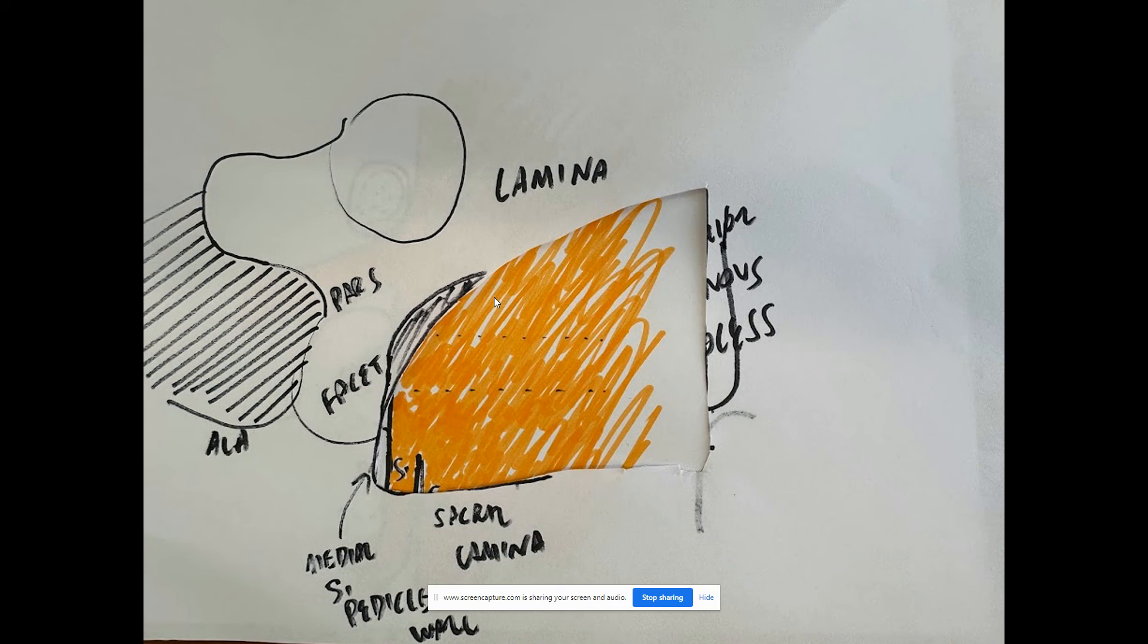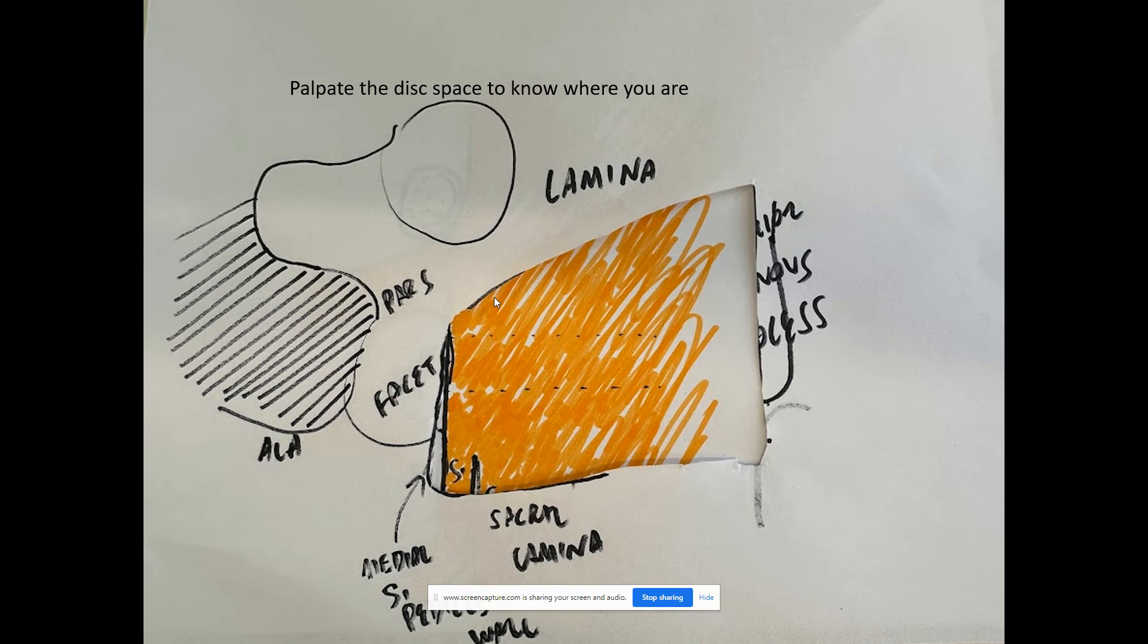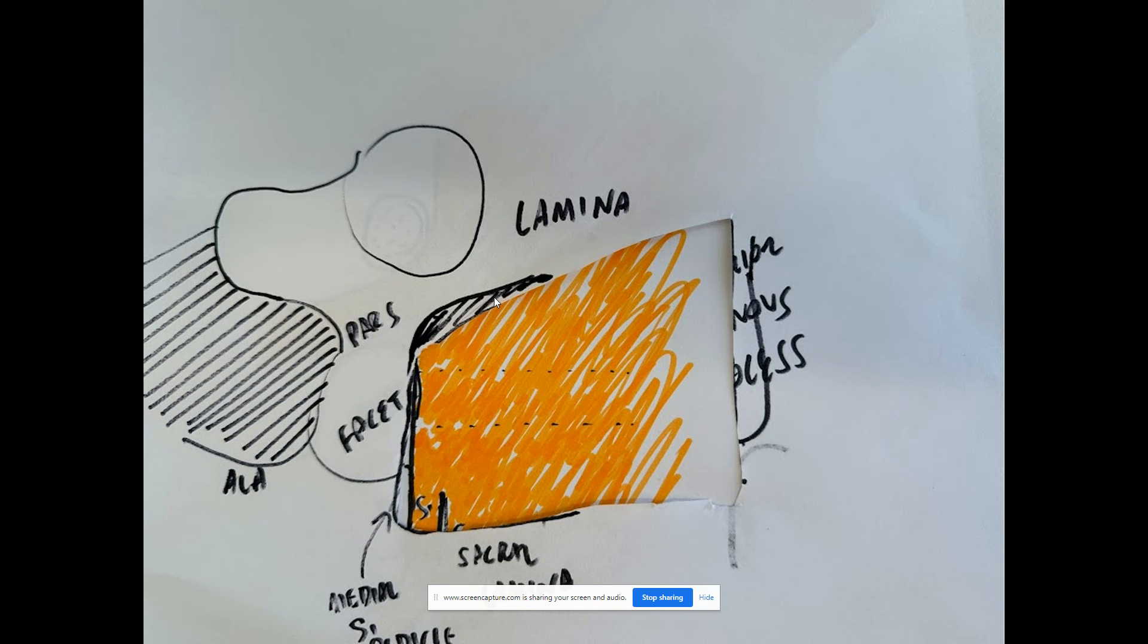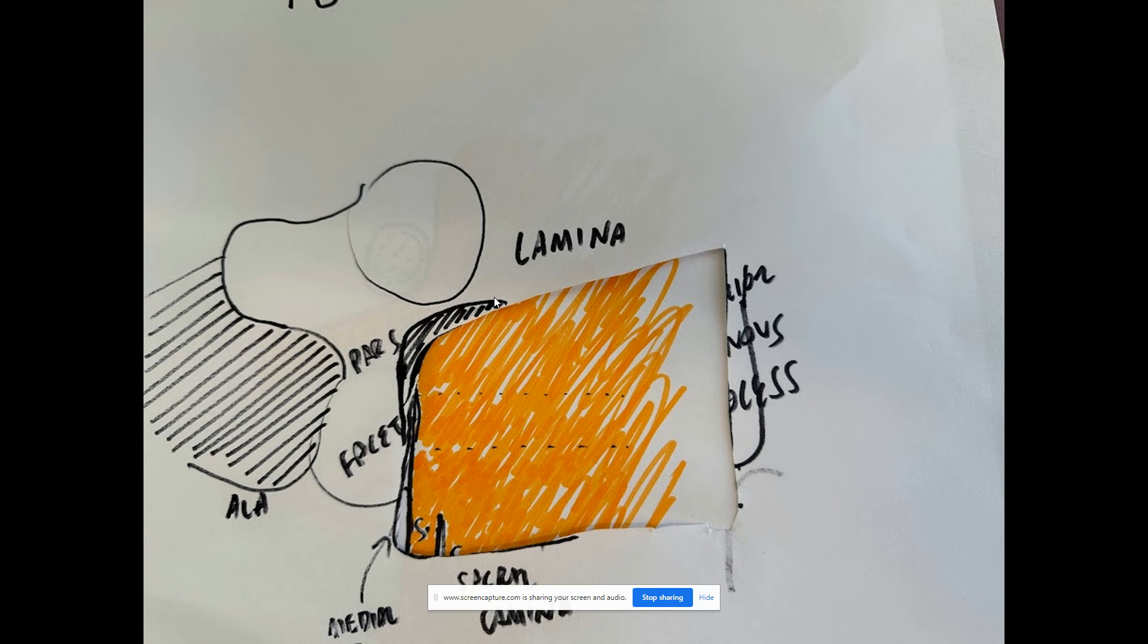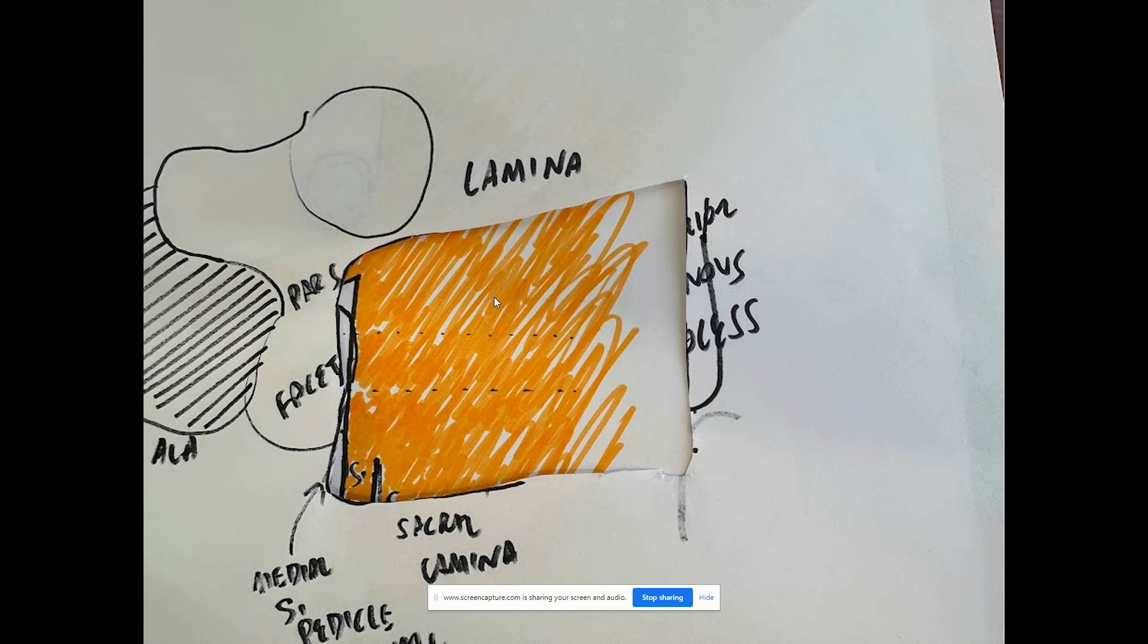You thin going rostral and keep palpating and feeling the disc space so you know where you are. Keep going rostral. At some point you have to go to the opposite side of the table. Keep thinning rostral and going lateral, and then hopefully you can find the axilla of the L5 nerve root where it exits.